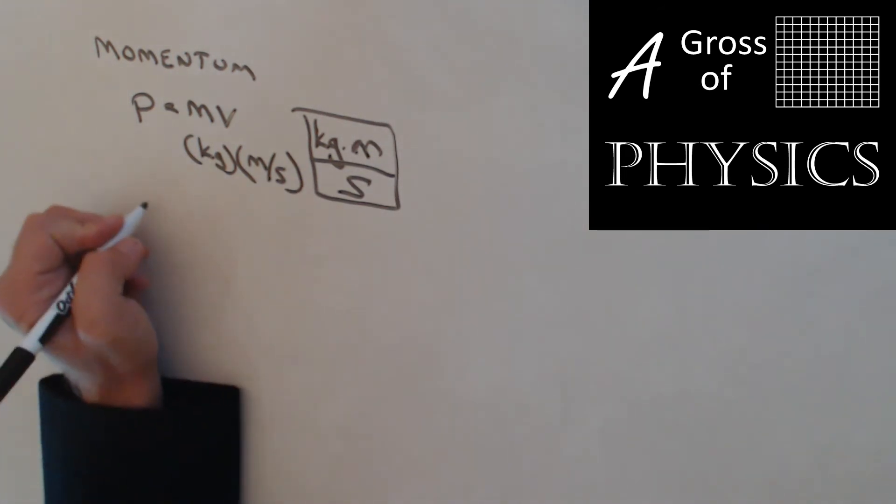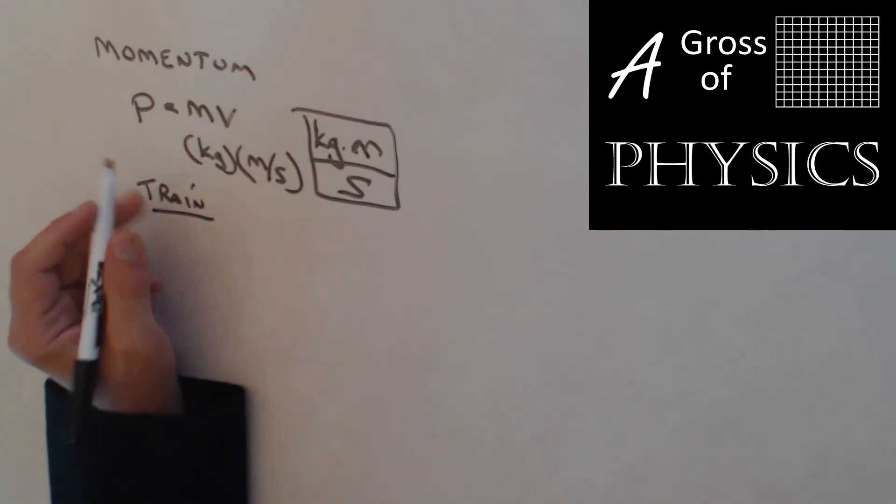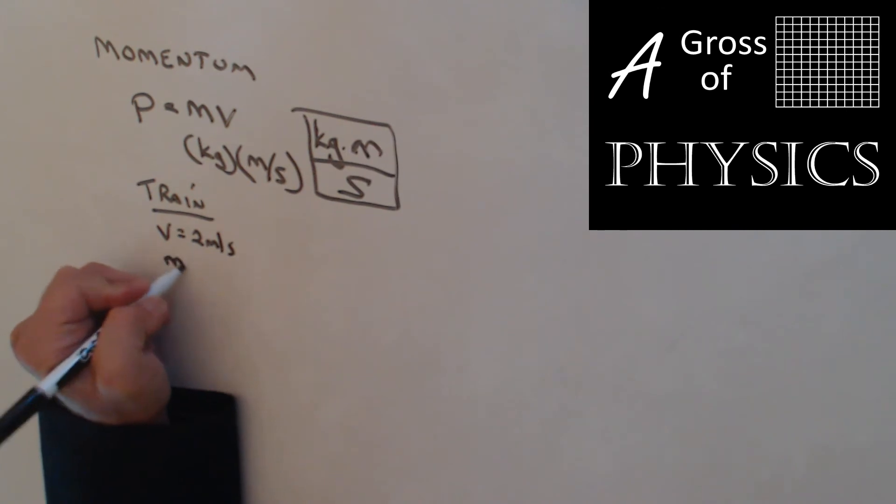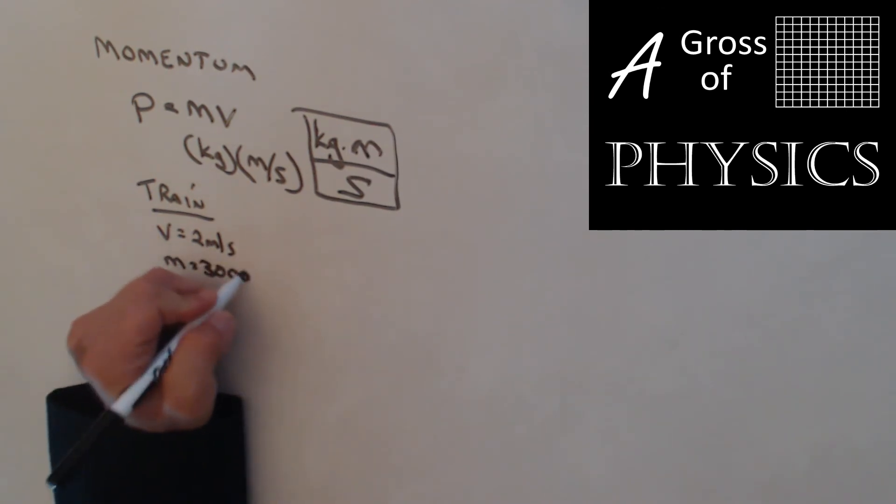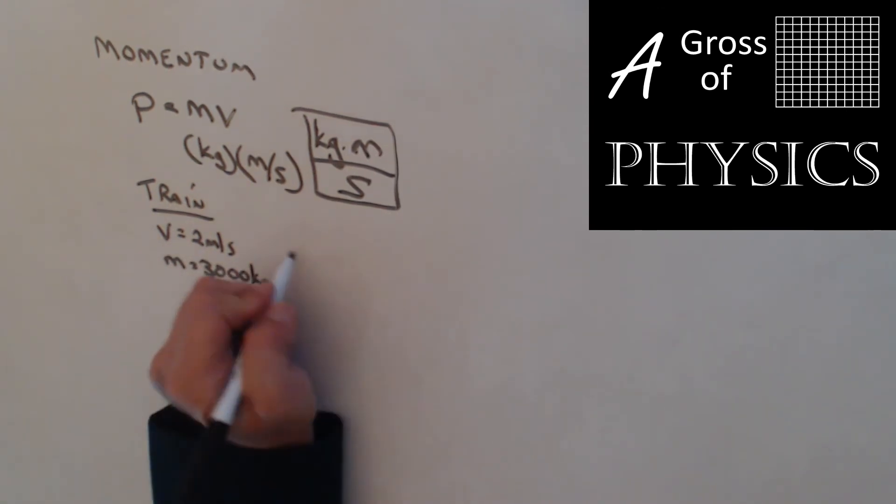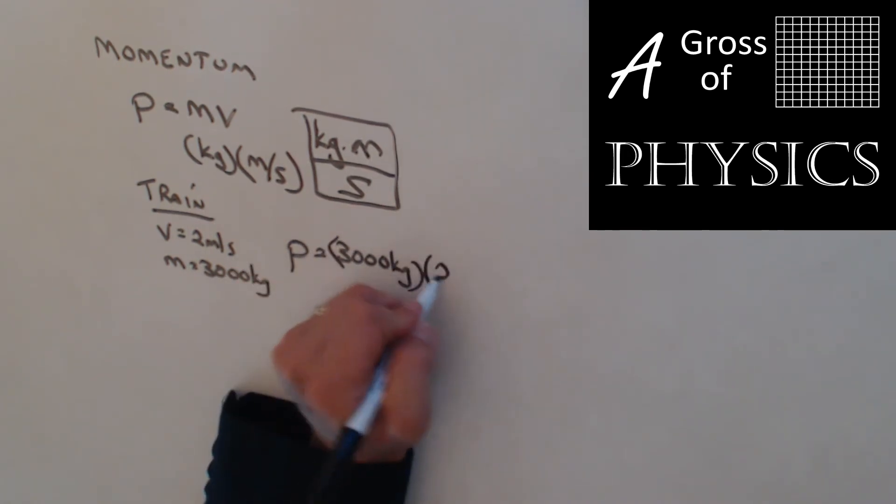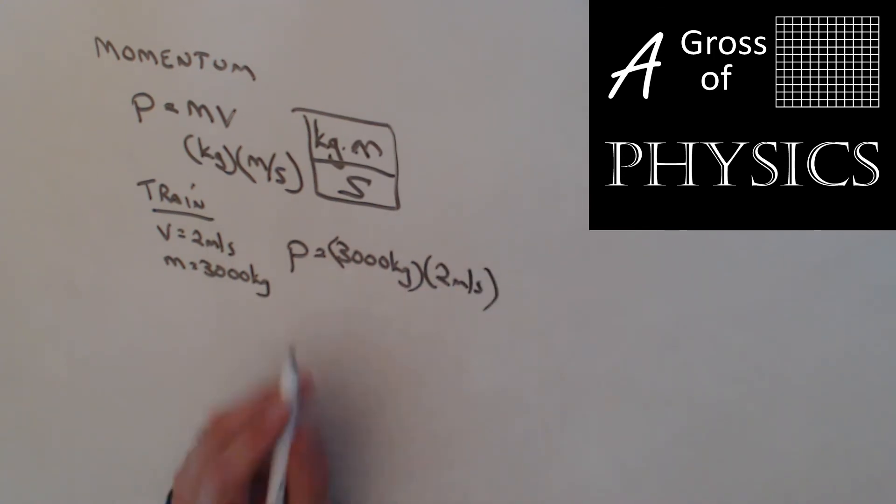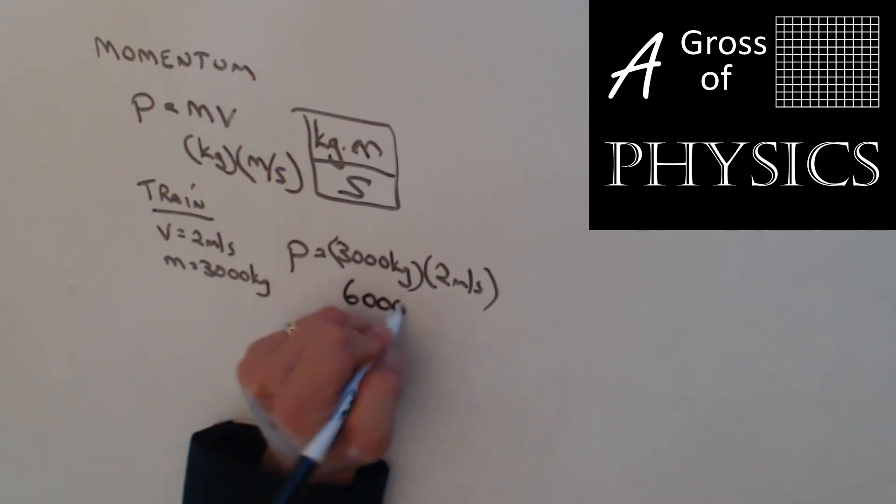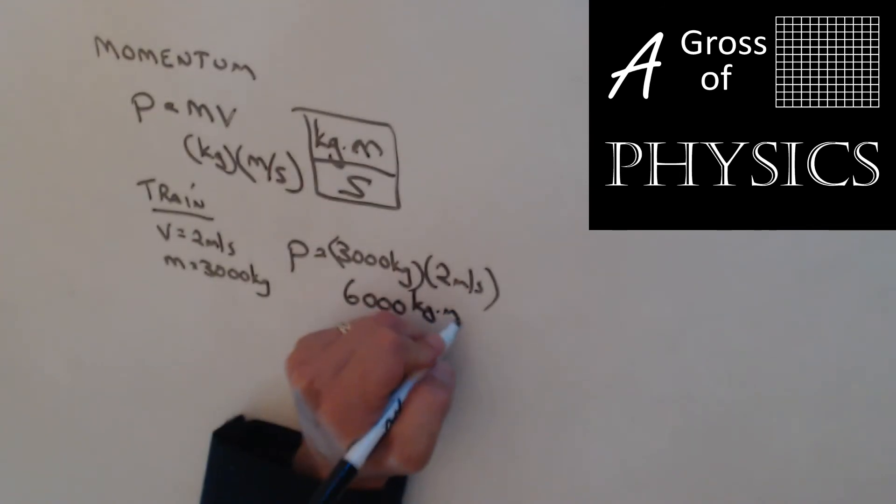Now if we have a train and it's traveling at 2 meters per second, so v is 2. It has a mass of 3,000 kilograms. The momentum of the train is simply 3,000 times 2, and that would be 6,000 kilogram meter over second.